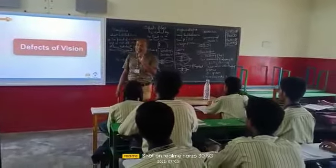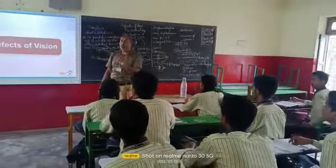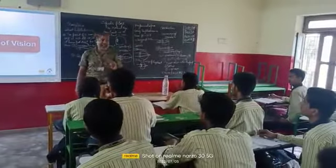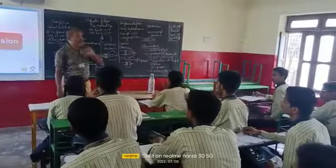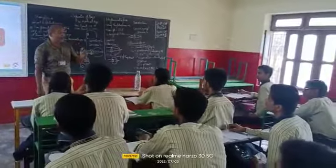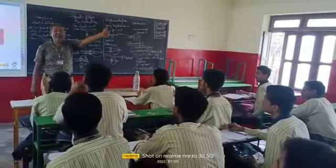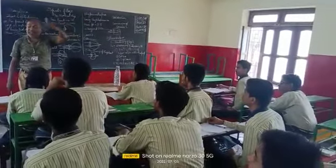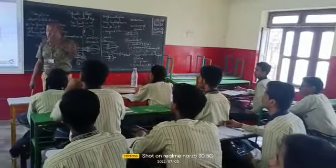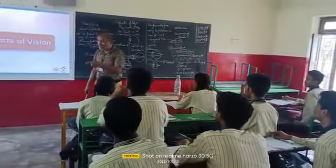Two basic things you need to know for a normal eye: the far point of a normal eye is infinity, and the near point of a normal eye is 25 centimetres.